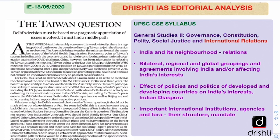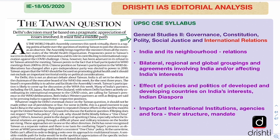We have taken today's editorial from the Indian Express, appearing on 18th May. The title is 'The Taiwan Question' and it says Delhi's decision must be based on a pragmatic appreciation of issues involved — it must find a middle path. This directly links with GS Paper 2 on international relations, India's neighborhood relations with China, and important international institutions because it deals with the World Health Organization.